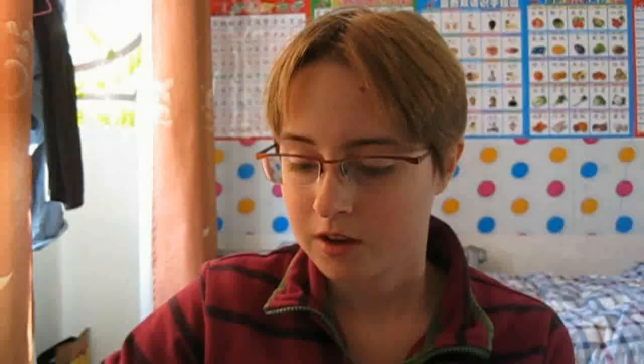The first thing I did was look at the data and visually think about how it would look on a graph. The bond length for fluorine is 143 pm, quite small, and it increases all the way up to iodine at 266 pm in a reasonably linear increase. So the first part of the question — explaining the trend in bond length — is actually very simple: the atoms are bigger, so the molecule must be bigger.